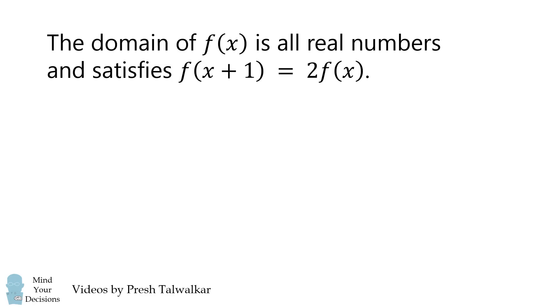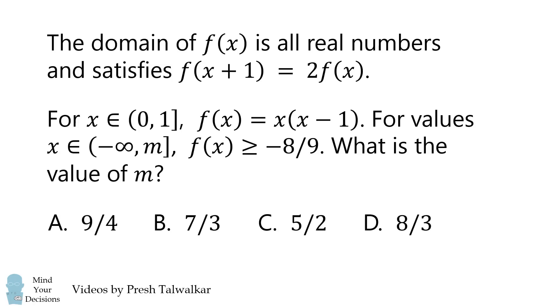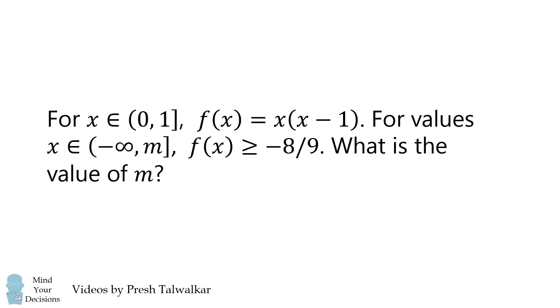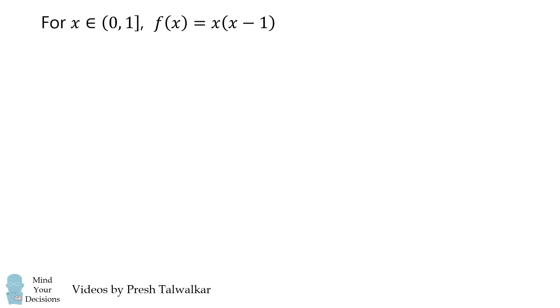So this is a very intimidating problem. Let's break it down step by step and get a real understanding of what the question is asking. So we'll start out with the most concrete information. For x in the interval 0 to 1, not including 0 but including 1, f of x is equal to x times the quantity x minus 1. Let's make a plot of this function. We'll go from 0 to 1, and let's graph what this function will look like.